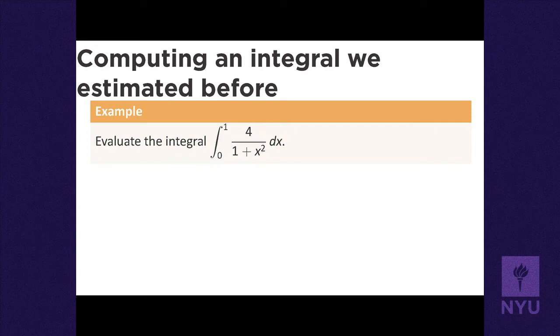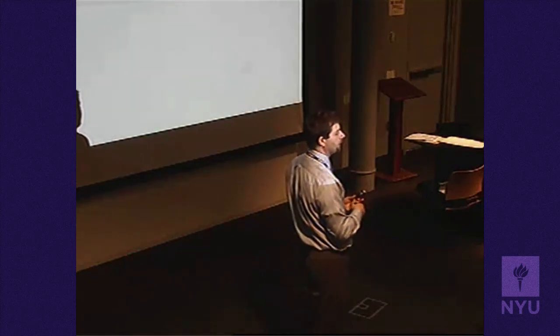We need an antiderivative of 4/(1 + x²). The antiderivative of 1/(1 + x²) is arctan(x), so the antiderivative of 4/(1 + x²) is 4·arctan(x). The derivative of arctan is 1/(1 + x²), so the derivative of 4·arctan(x) is 4/(1 + x²). The numerical estimate was about 3.1468.